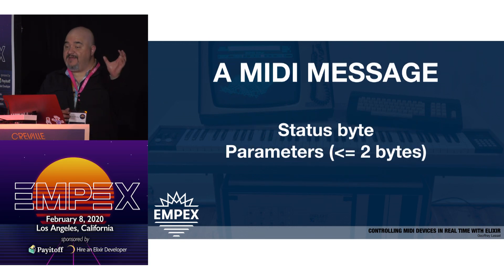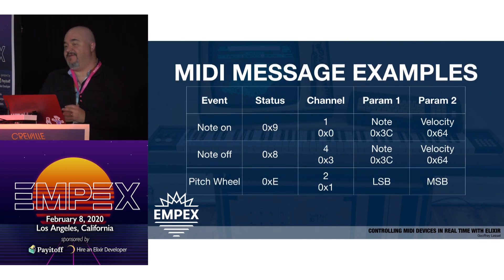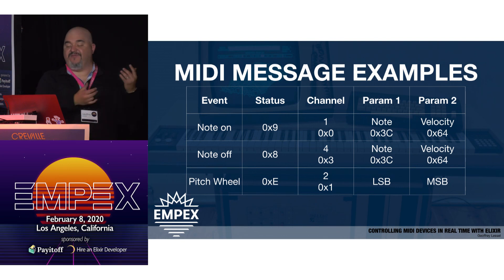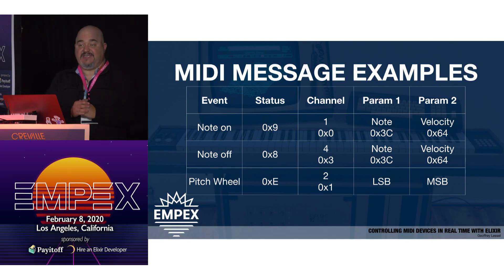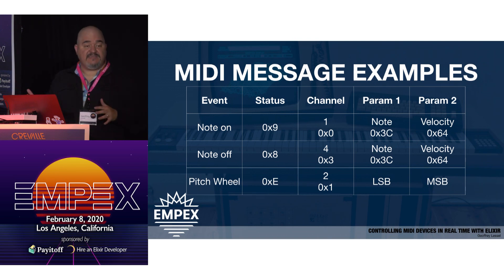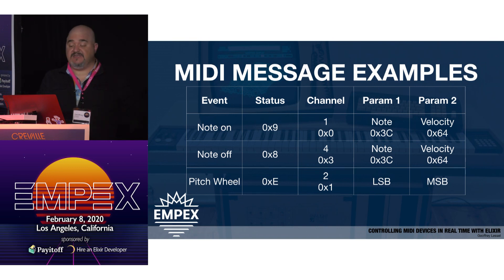A MIDI message has a status byte and up to two bytes of parameters. For example, the note on message says I want the synthesizer on channel one to hit middle C. Note on in hex is 9, and on channel one — which is actually zero — the first byte you send is 0x90. The first parameter is which pitch you want: middle C is 60, or 0x3C in hex. Then there's velocity — basically how hard you hit the note. On a piano, the harder you hit the keys, the timbre and loudness differ; a string might distort. That information is sent as velocity.